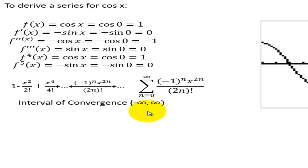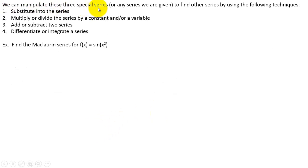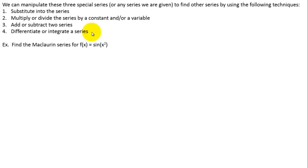The more terms you add, the better the estimate is going to be. We don't have to stay within negative 1 to 1 like we did with e to the x. We can manipulate these three special series, or any series we are given, to find other series by using the following techniques: substitute into the series — replace x with something else; multiply or divide the series by a constant and/or a variable using the distributive property; add or subtract two series; differentiate or integrate a series term by term.